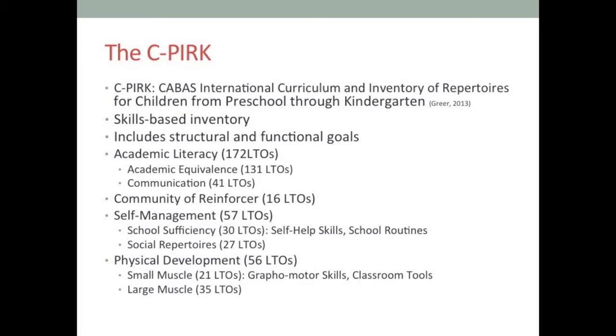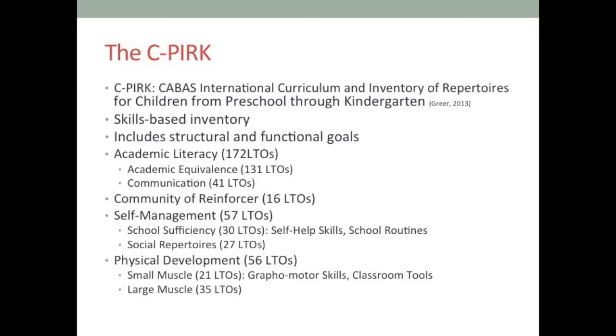There is research showing that when books are conditioned as reinforcers — when a student enjoys looking at books — they learn to read faster. So conditioning books as reinforcers is something we try to do early on because it affects reading later. We use the C-PIRK as our assessment — the CABAS Inventory of Repertoire for Children from preschool to kindergarten. Even though I work with older students beyond kindergarten, I still use the C-PIRK because some may be early learners at a pre-speaker or pre-listener level. The C-PIRK is a skills-based inventory, not a standardized test — it doesn't compare results with the general population but tells us exactly what the student can and cannot do.